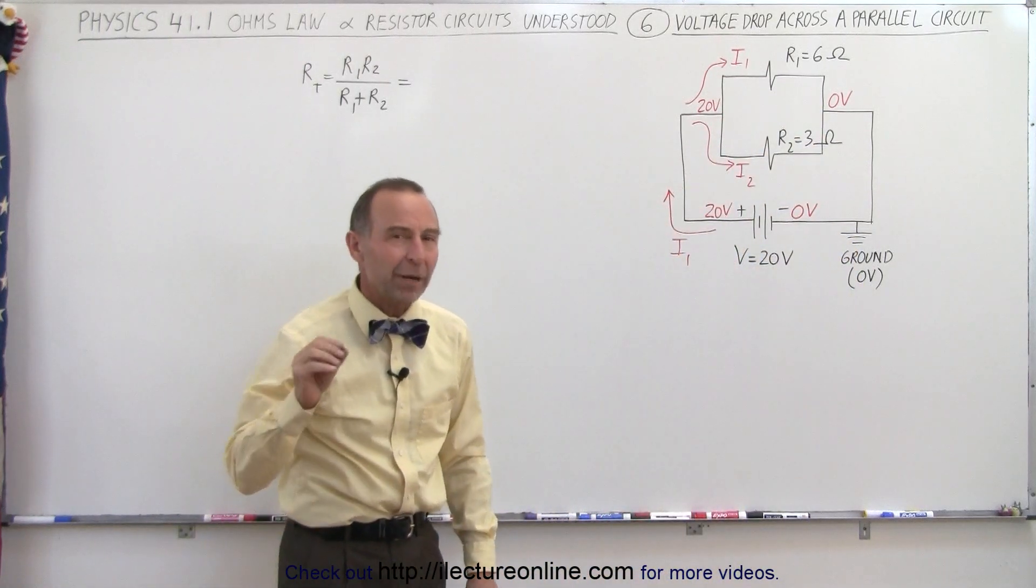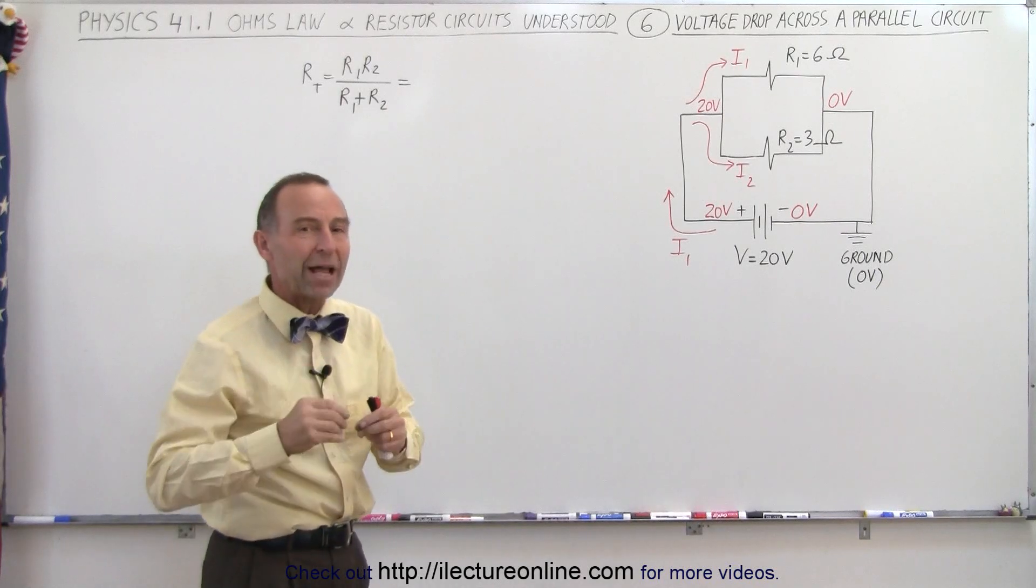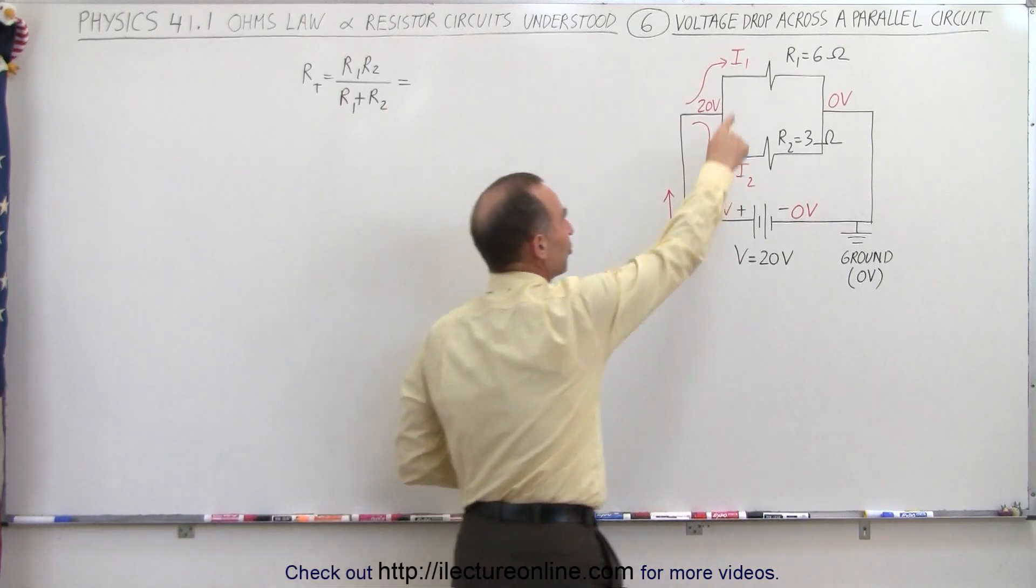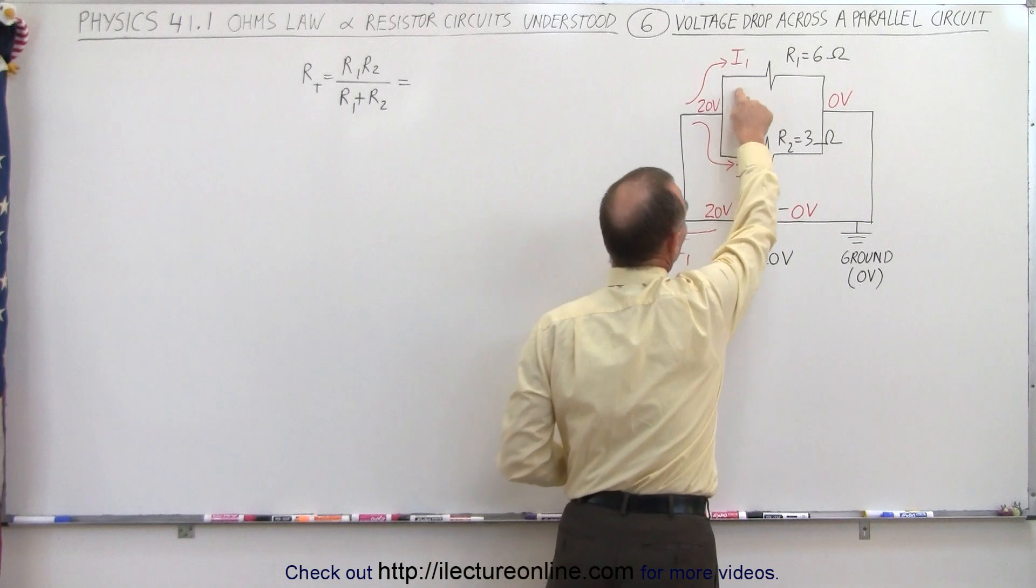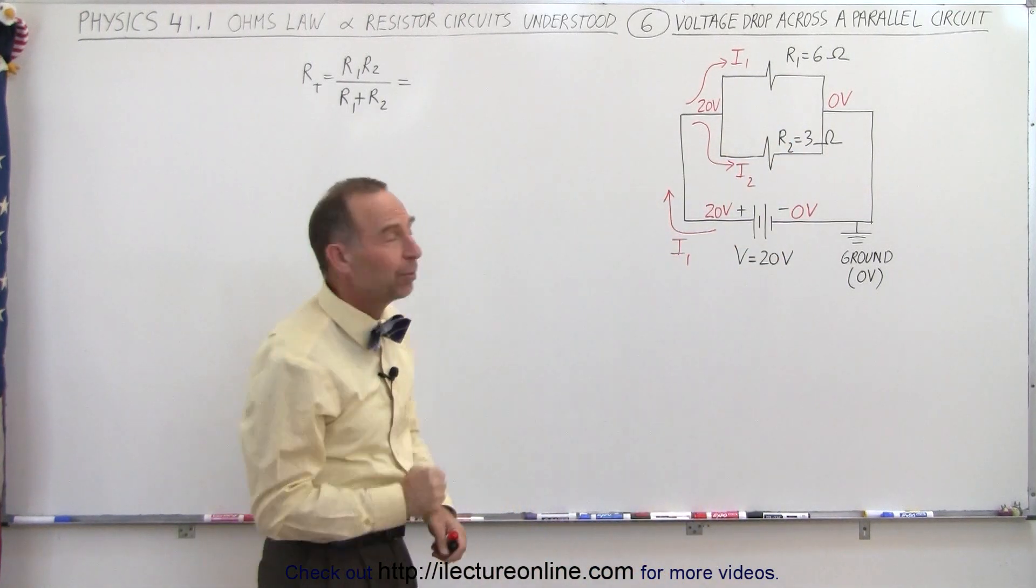That means in parallel circuits, the voltage drops are the same on each branch that is in parallel. Here we have two branches in parallel, which means the voltage drop across each of those two resistors must be the same, must be 20 volts.